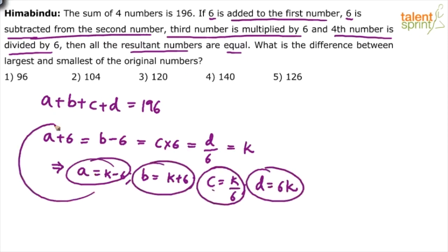Substitute these in the first equation. A, B, C, D equals to 196. So what do we get? A is K minus 6 plus B is K plus 6, C is K by 6 and D is 6K equals to 196.